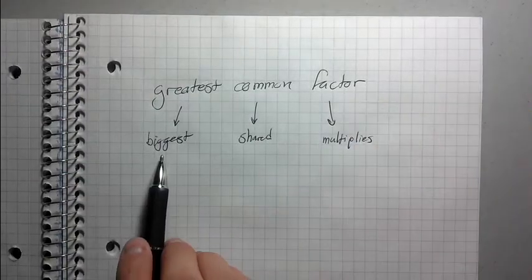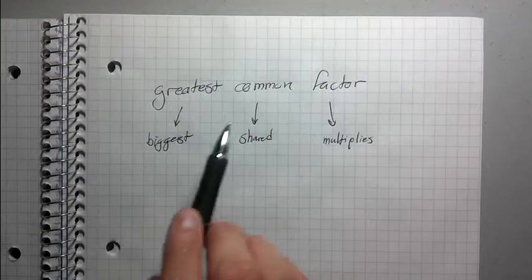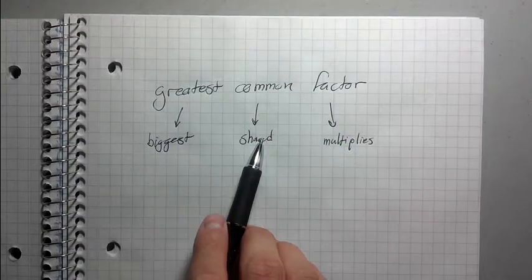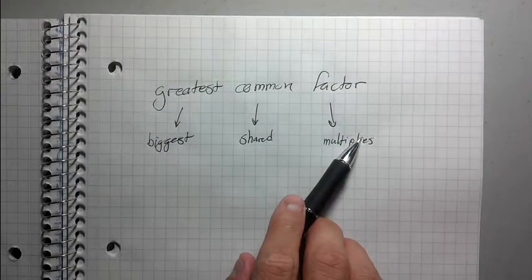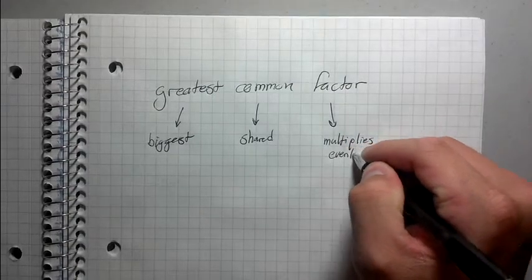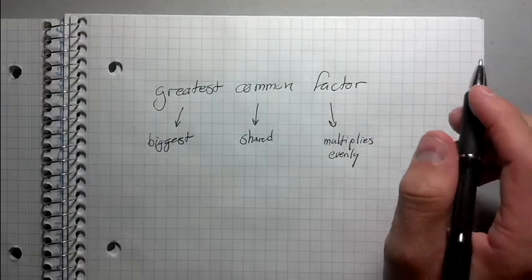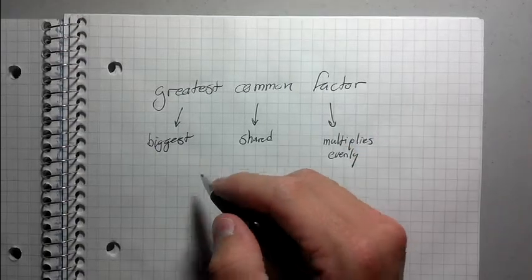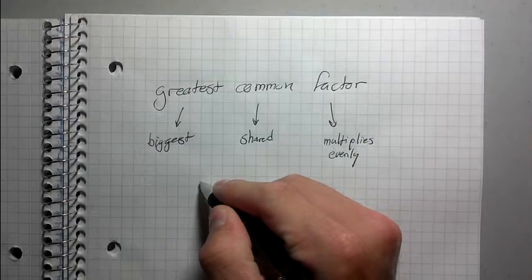So really, what you're looking for, instead of the greatest common factor, you could think of it as the biggest shared thing that multiplies evenly. Let me give you an example here. Let's say that I had two numbers.